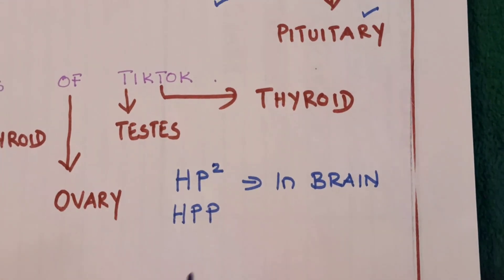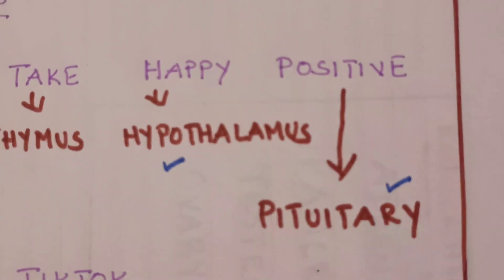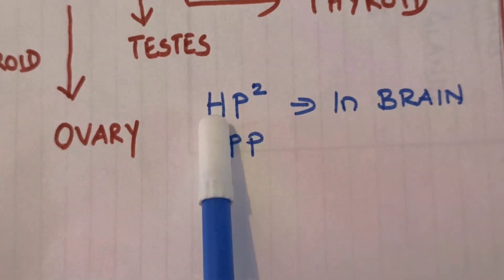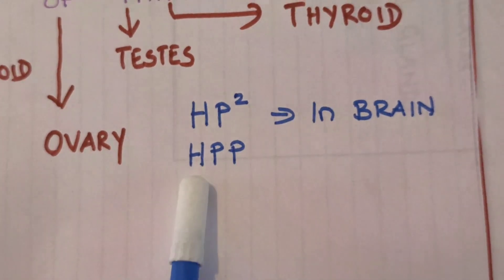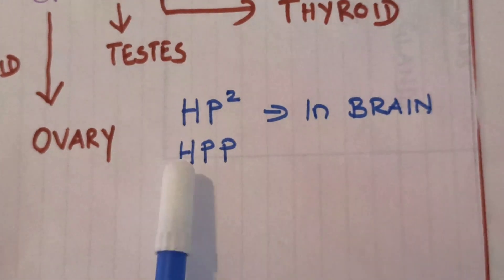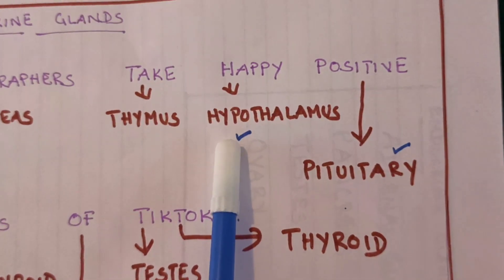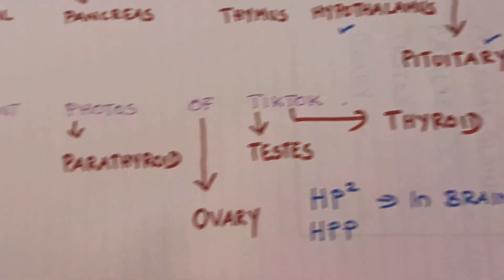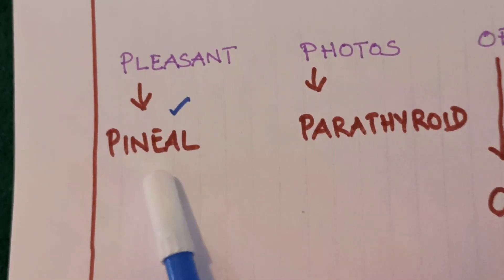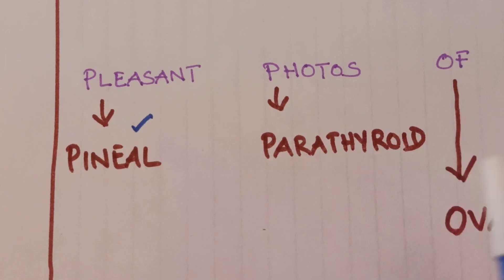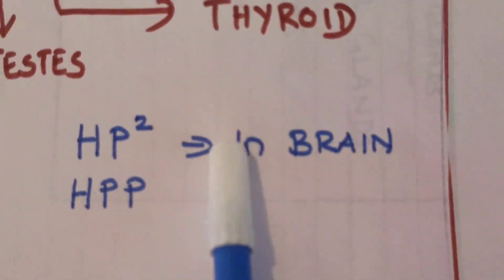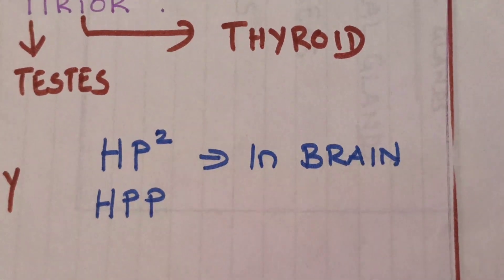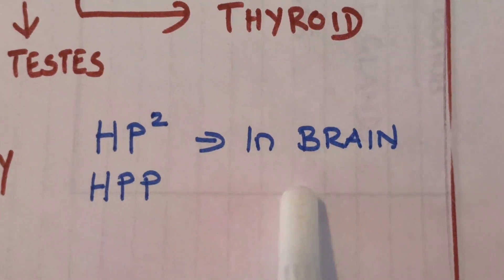So hypothalamus, pituitary, and pineal glands are located in the brain — HP square in brain. You can see the location of these three glands in the diagram.